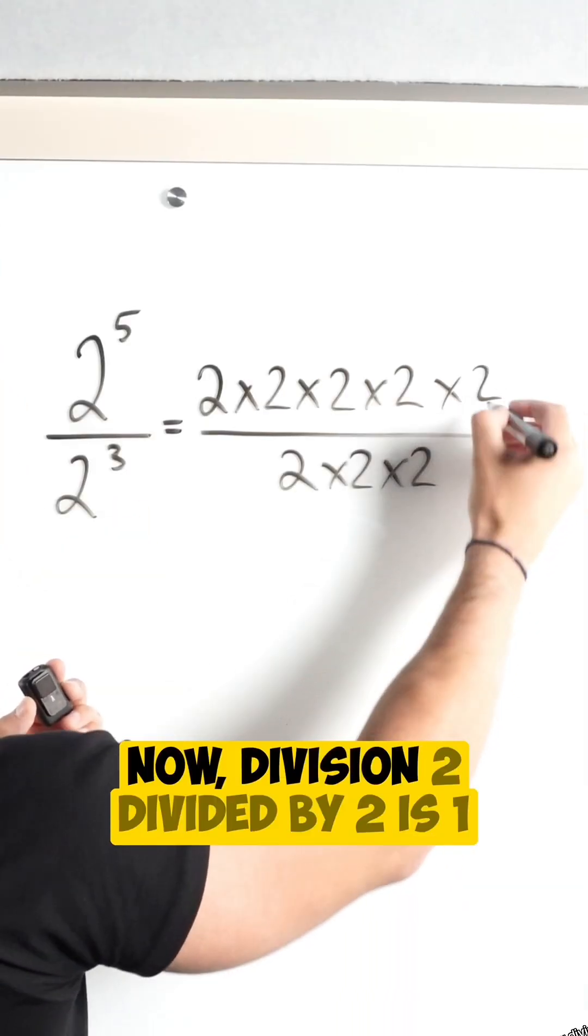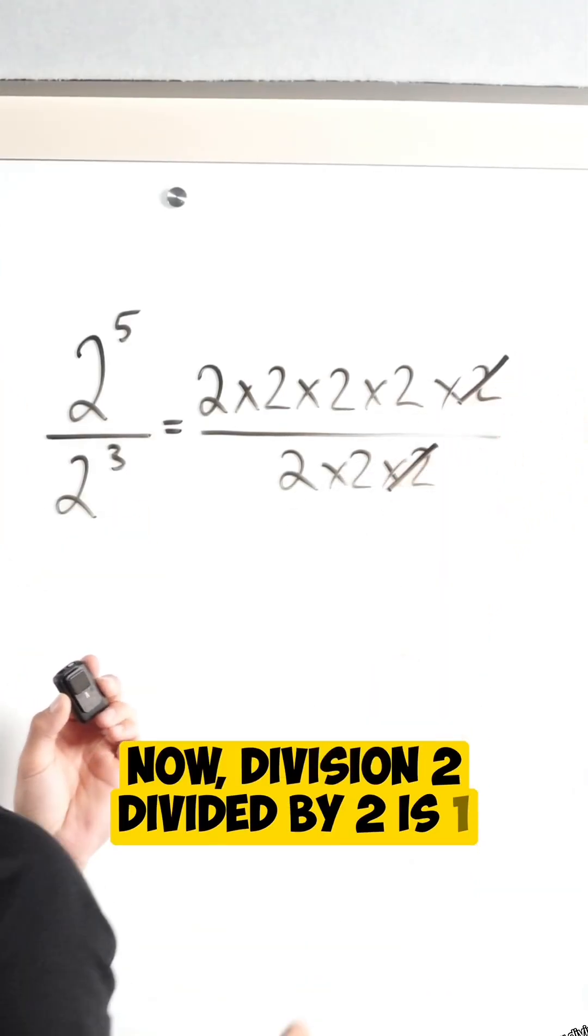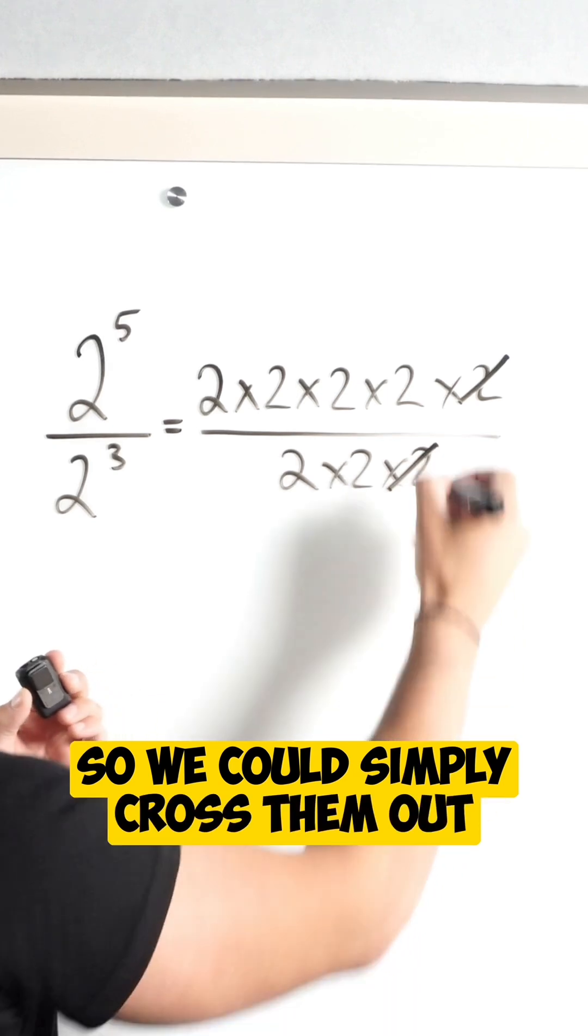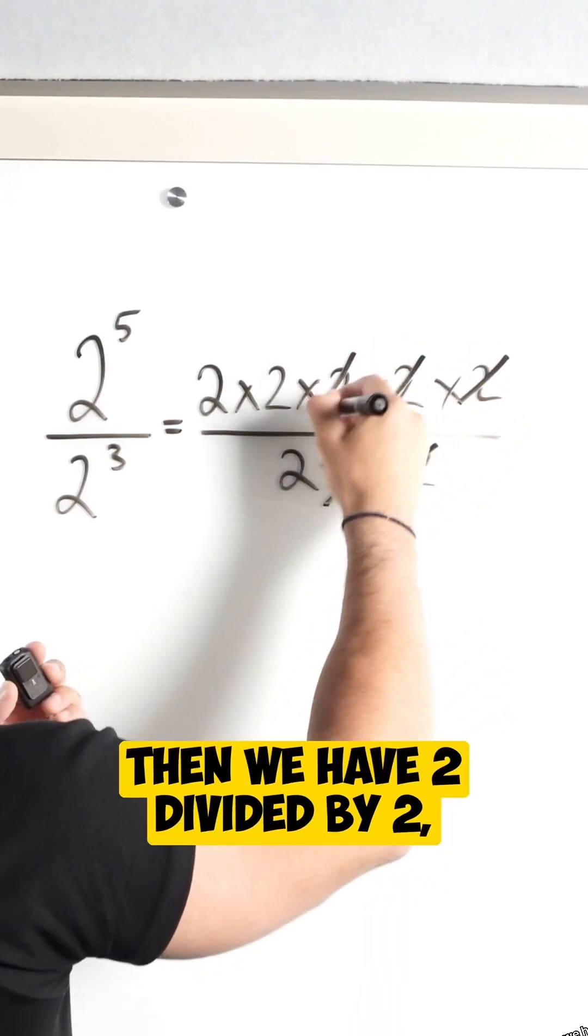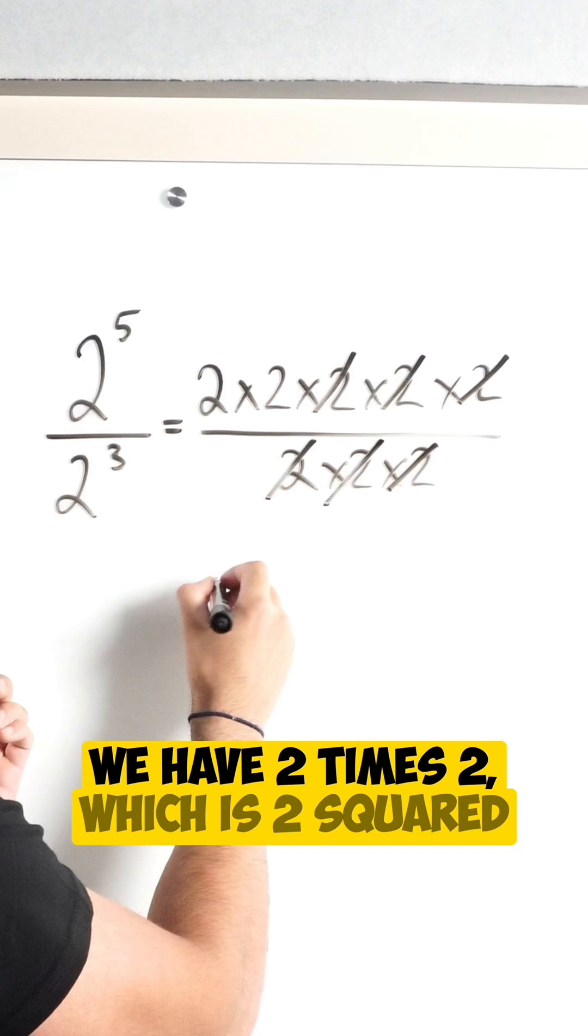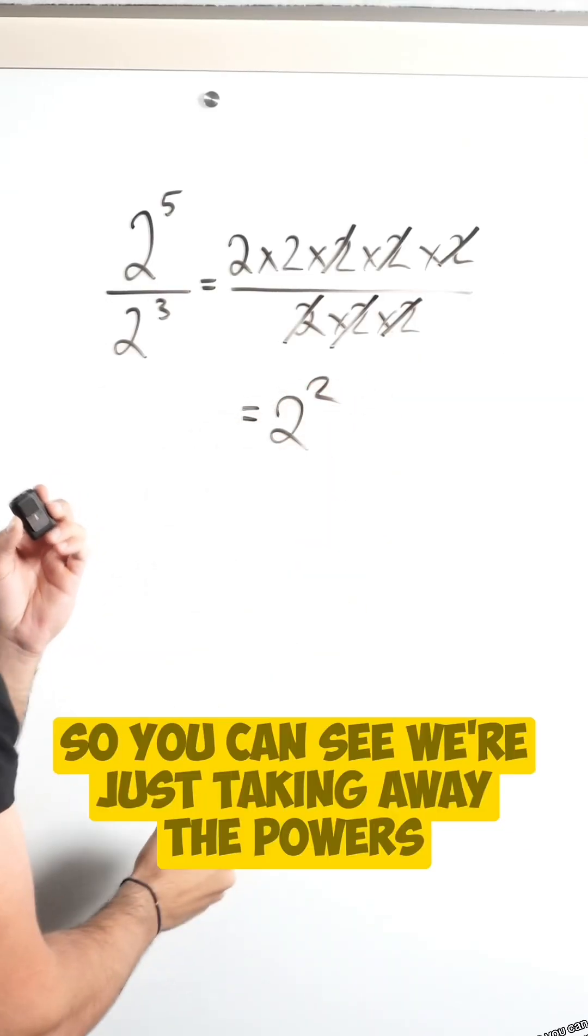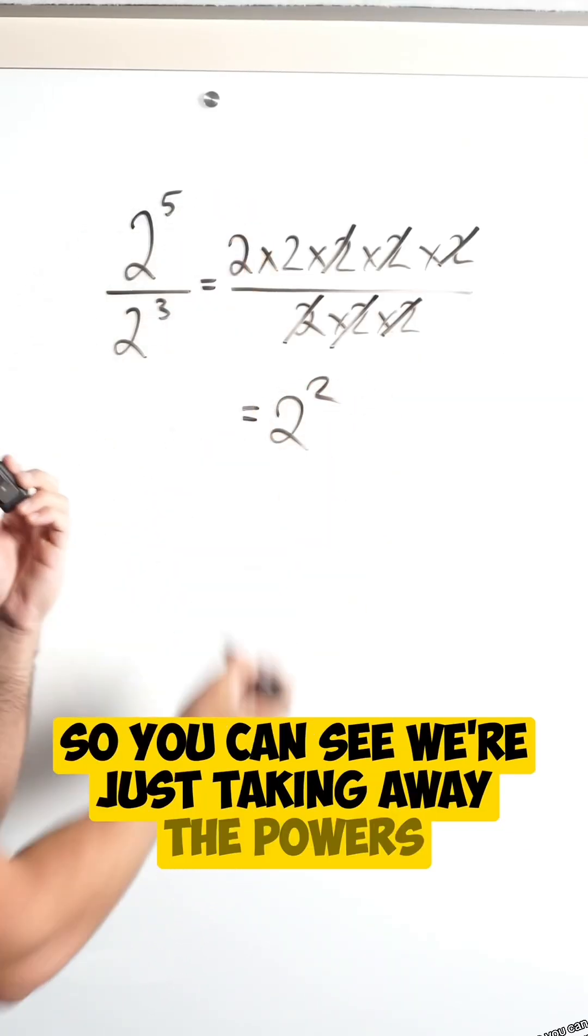Now division, two divided by two is one, so we can simply cross them out. Then we have two divided by two, two divided by two. We have two times two, which is two squared. So you can see we're just taking away the powers.